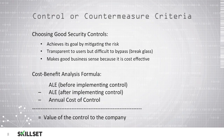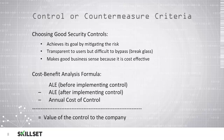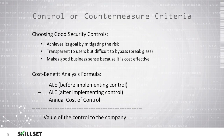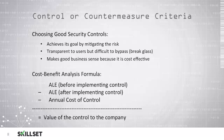When we're calculating the cost-benefit analysis, we can use the formula provided here, where we take our annualized loss expectancy before we implement a control, subtract the annualized loss expectancy after we've implemented the control, and then subtract the annual cost of the control — that gives us the value of the control to the company. For example, if our ALE before implementing a fire suppression system was $100,000, and the ALE after implementing it was $50,000, and the cost of the control was $5,000, then the value of that control to our company would be $45,000. We would be getting a very good return on investment. However, if the value of the control were negative, we should not purchase that control because it would not be cost effective.